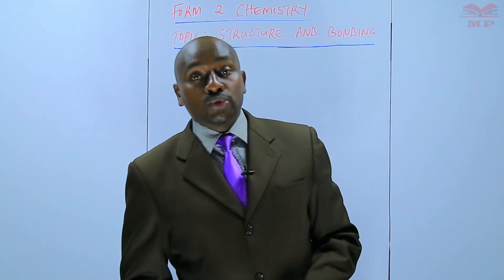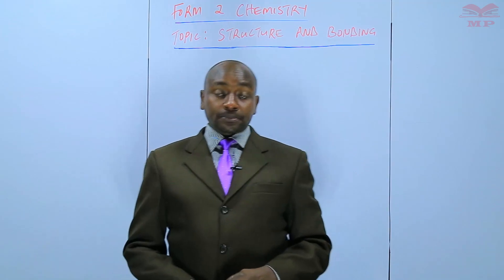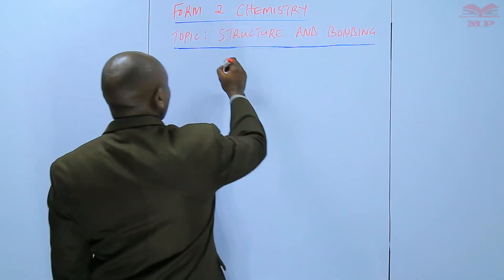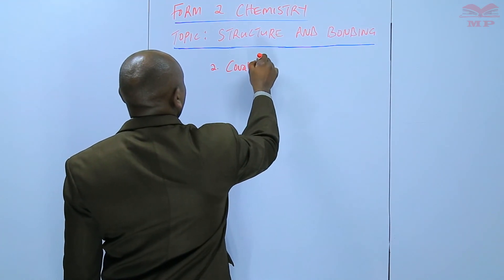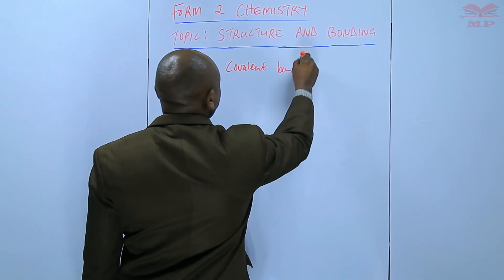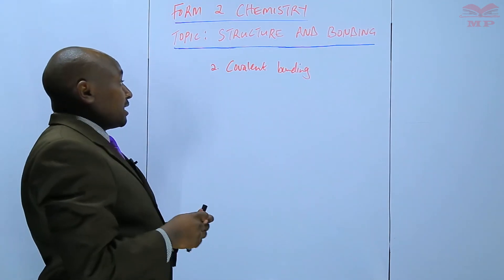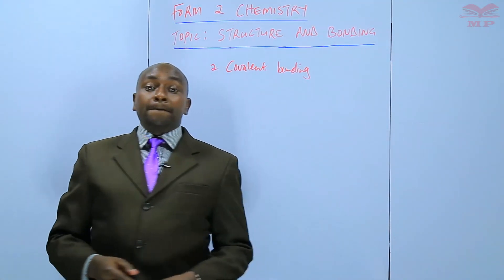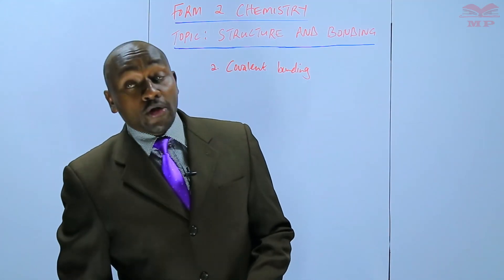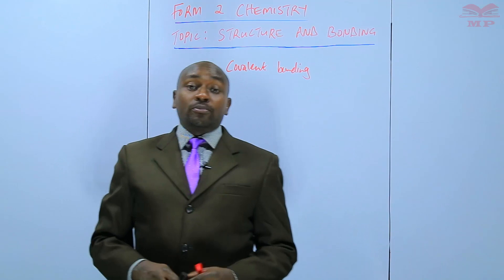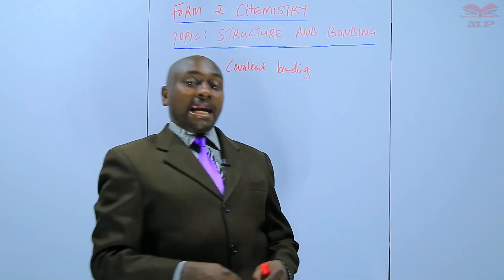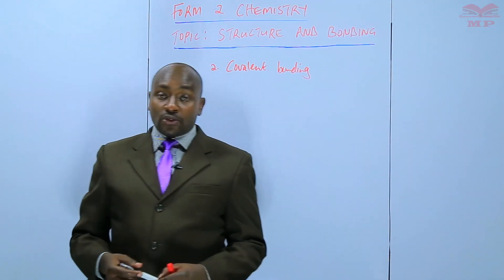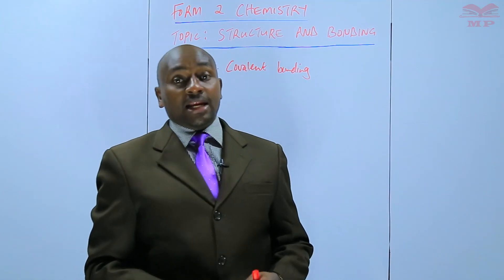We are going to discuss the second type of bond, and this is covalent bonding. Covalent bonding is the type of bonding that exists between two or more non-metals through sharing of outermost electrons.